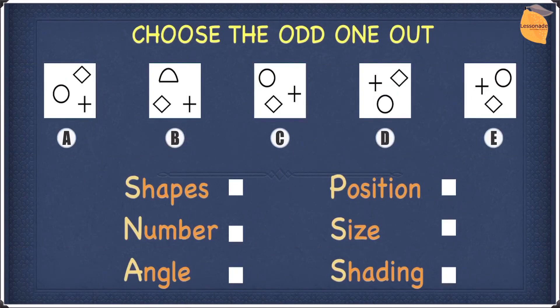For this example, using SNAPS, we're going to first compare the shapes. So in all of the options above, we can say that A, B, C, D, and E, they all contain a plus.